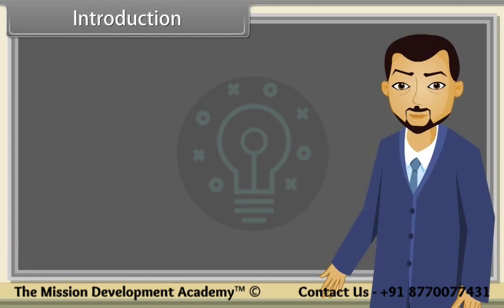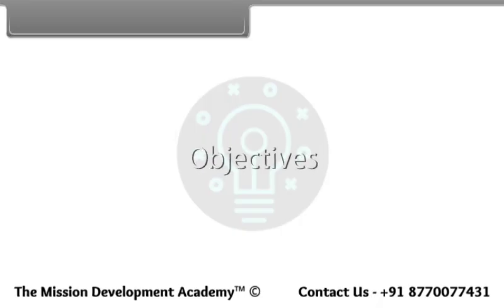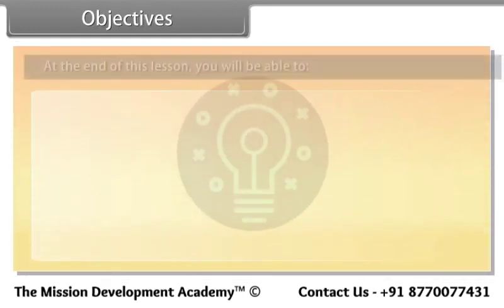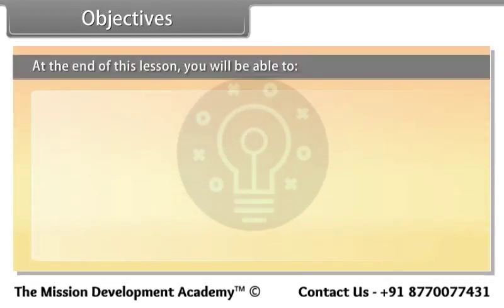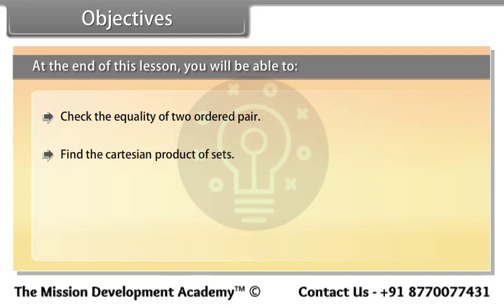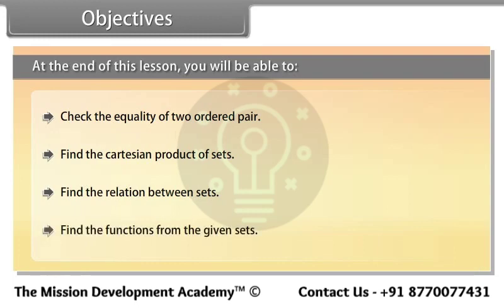In this lesson, you will learn the relations between two objects of two non-empty sets. At the end of this lesson, you will be able to: check the equality of two ordered pairs, find the Cartesian product of sets, find the relation between sets, and find the functions from the given sets.